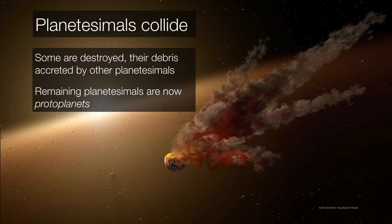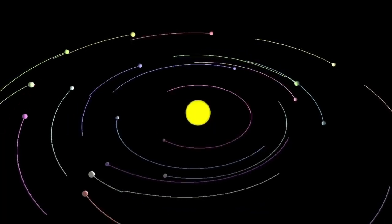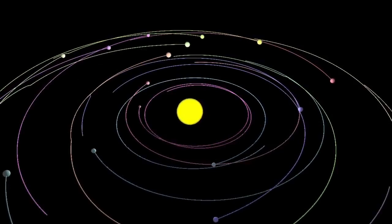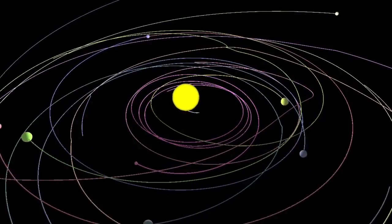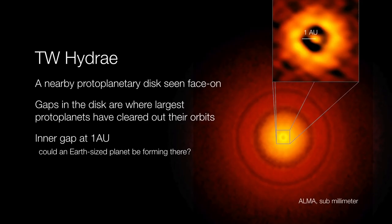And these planetesimals collide in a kind of proto-solar system demolition derby. Most of these are destroyed and are later accreted onto other planetesimals. And the most massive of these planetesimals survive and are now proto-planets. They begin to clear out their orbits. You can even do a simple computer simulation like we have here, and you can easily see how, as objects collide into one another, there are fewer and fewer of these objects remaining. And so when we look in systems like TW Hydra, we can actually see those rings. We can actually see those lanes being carved out by proto-planets within the disk.